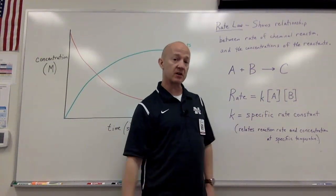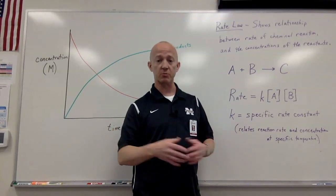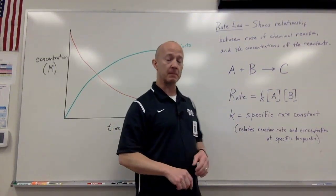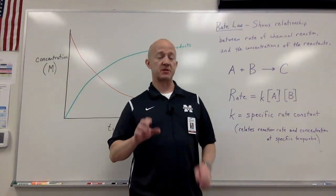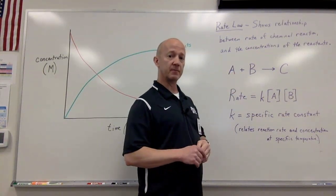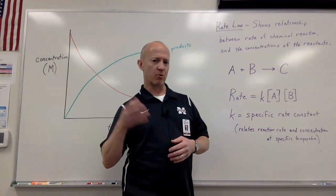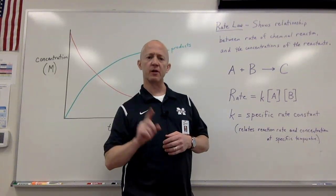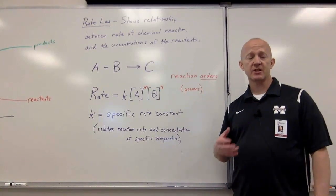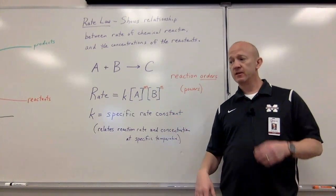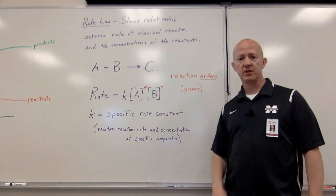Even if the rate of reaction changes, the specific rate constant for that reaction will not — as long as it's at the same temperature. If you change the temperature, you change the rate, and you'd have a different value of K. But as long as the reaction is kept at the same temperature, K remains constant. Sometimes the relationship is very straightforward: if I double the concentration of A and my reaction rate doubles, that's what we call a first-order relationship — whatever I do to the reactant, it does the same thing to the rate.